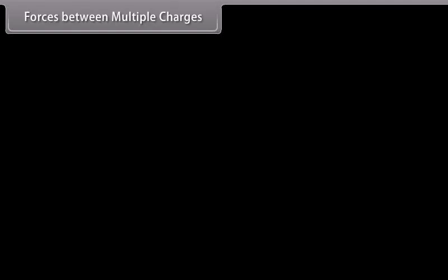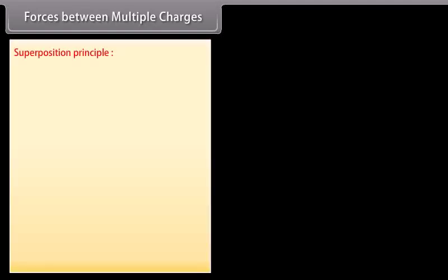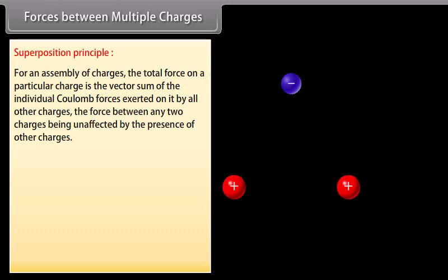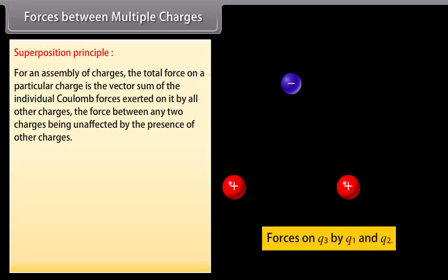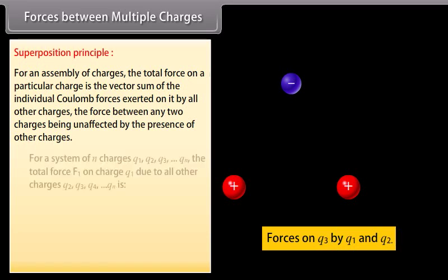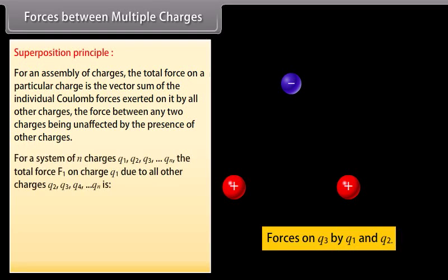Forces between multiple charges — Superposition principle: For an assembly of charges, the total force on a particular charge is the vector sum of the individual Coulomb forces exerted on it by all other charges, with the force between any two charges being unaffected by the presence of other charges. For a system of n charges q₁, q₂, q₃, ..., qₙ, the total force F₁ on charge q₁ is F₁ = F₁₂ + F₁₃ + F₁₄ + ... + F₁ₙ.